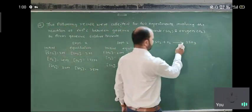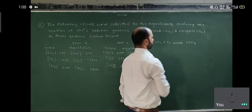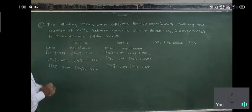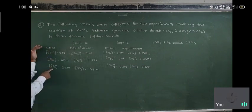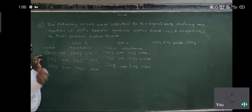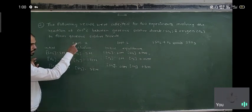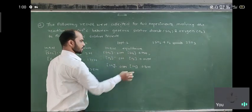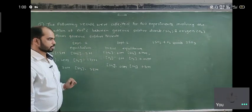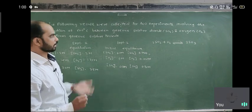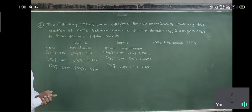When this reaction is carried out, data is given for two experiments. In experiment number one, the initial concentrations and the concentrations at equilibrium are given. In experiment number two, the initial concentrations and the concentrations at equilibrium are also given.